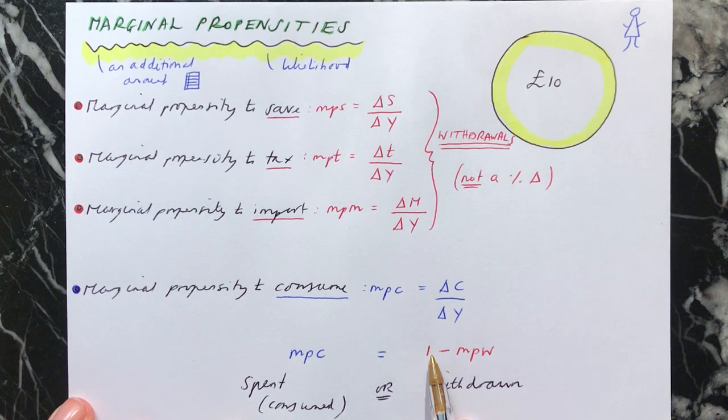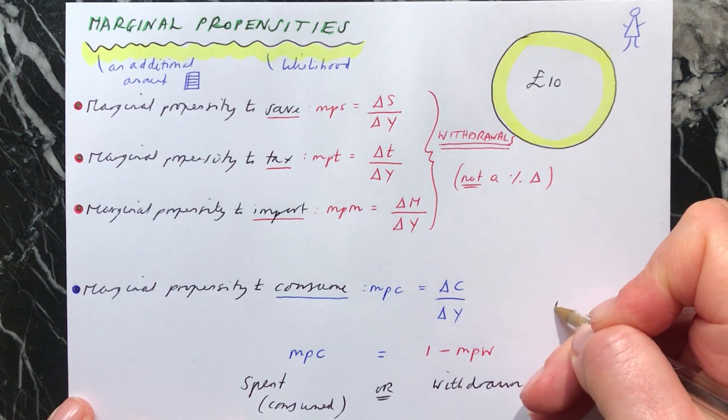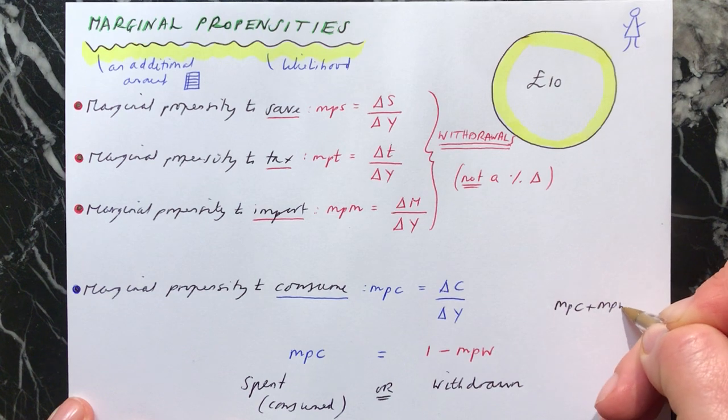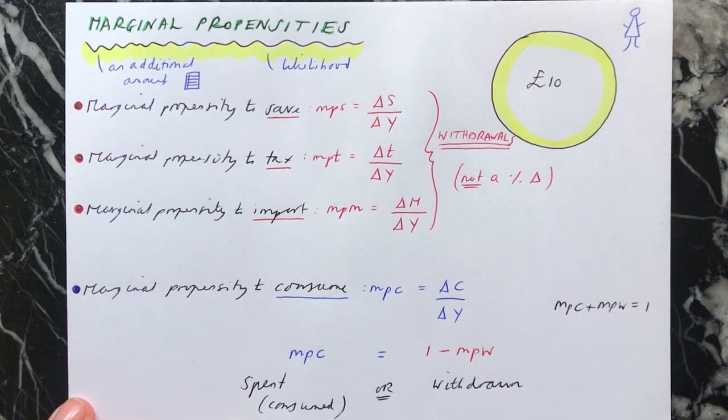Because if one is representing all of the additional money that you've received and you take away the proportion of that that's spent on consumption, you're going to be left with what's withdrawn from the economy. Because also it's true that the marginal propensity to consume plus the marginal propensity to withdraw must equal 1.